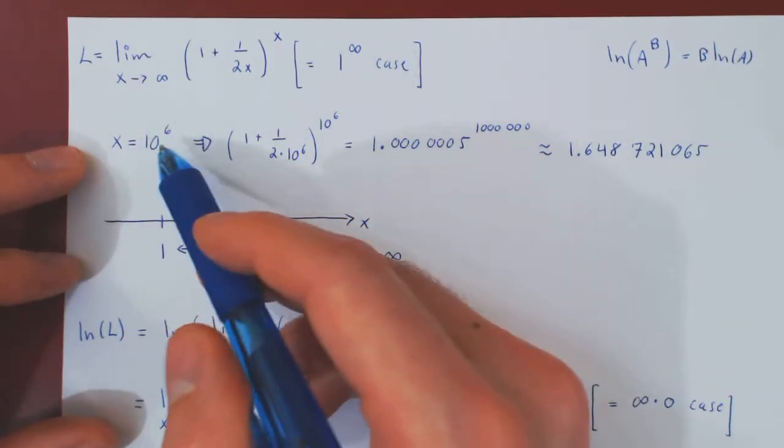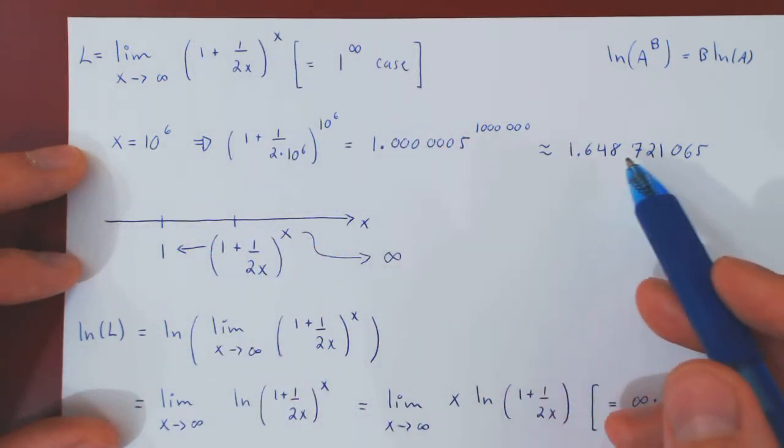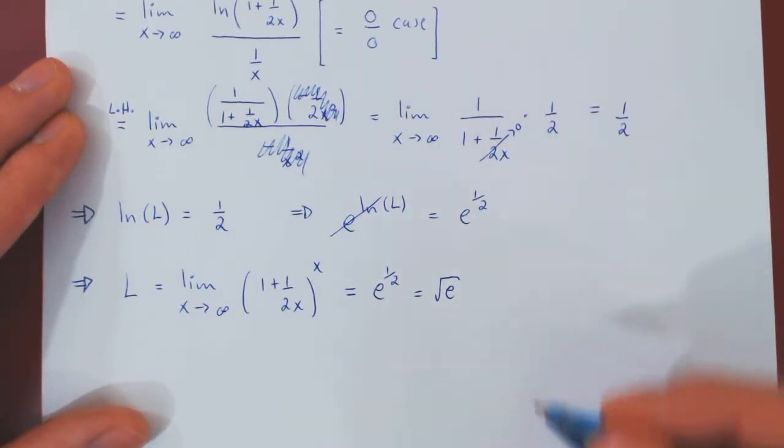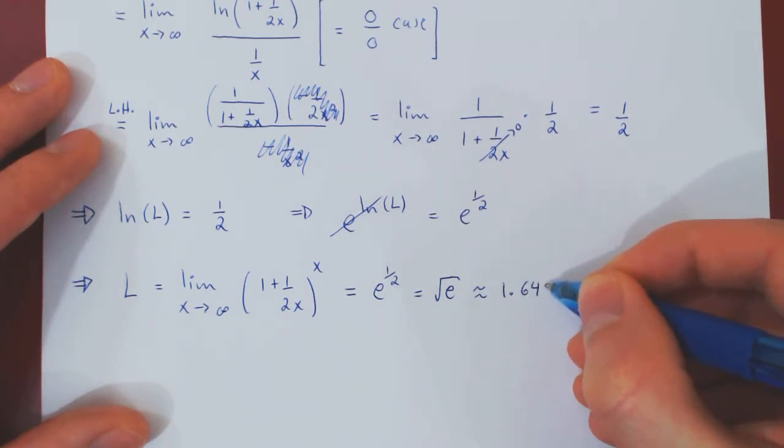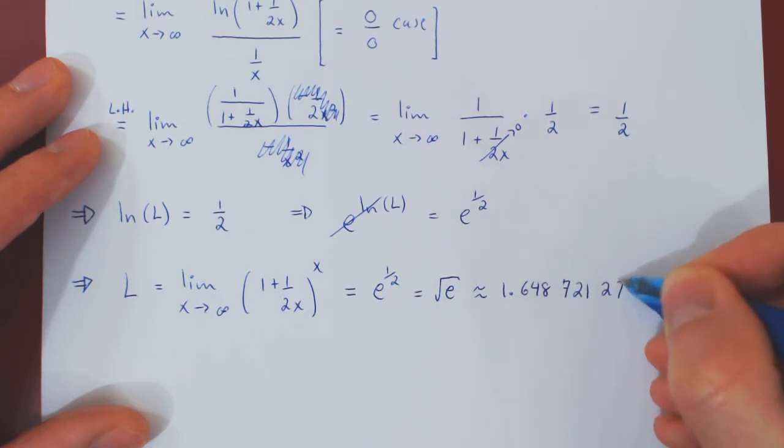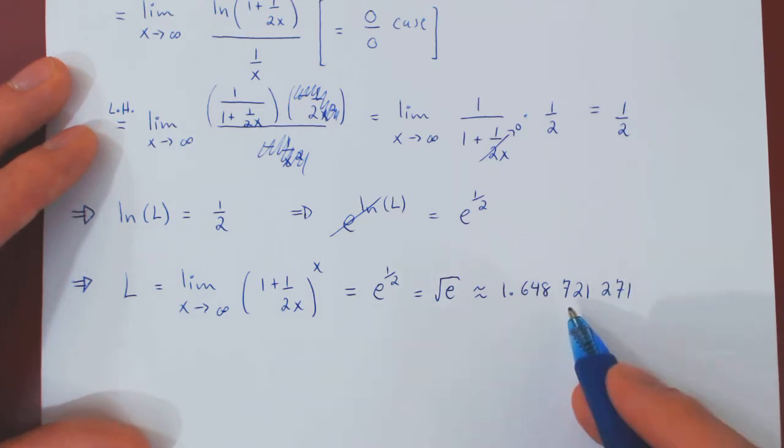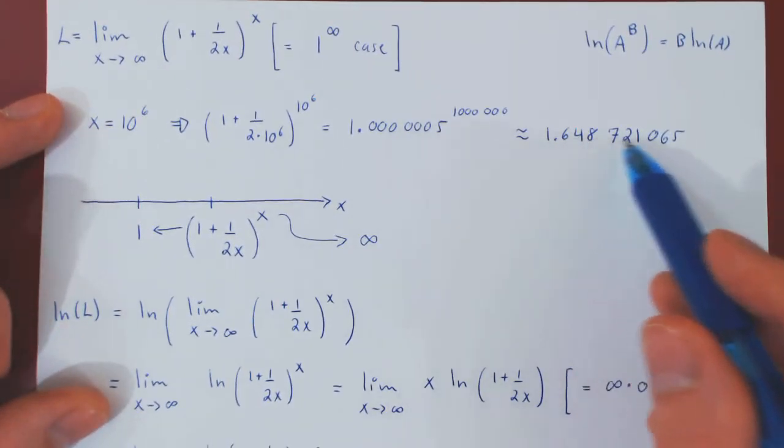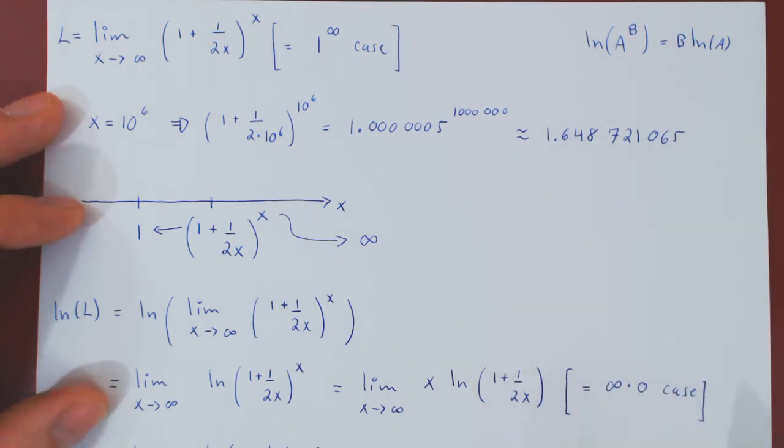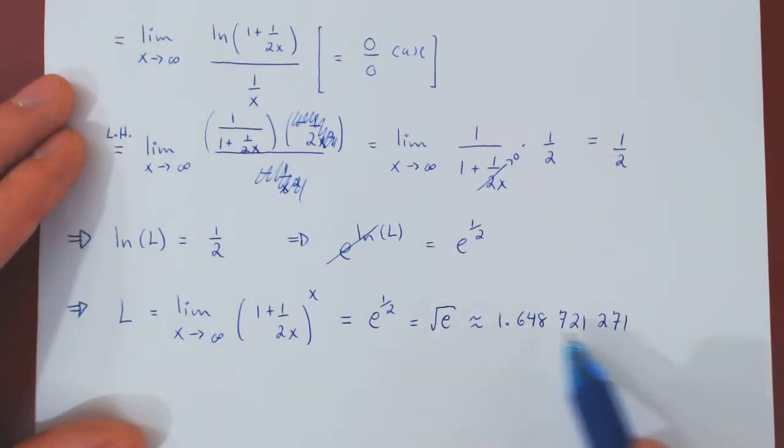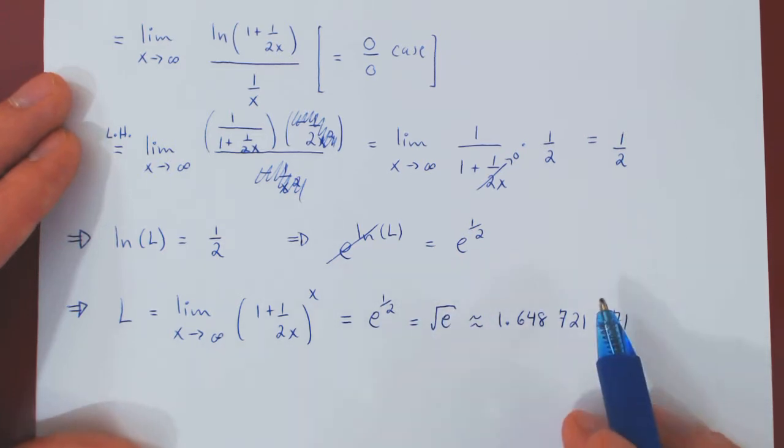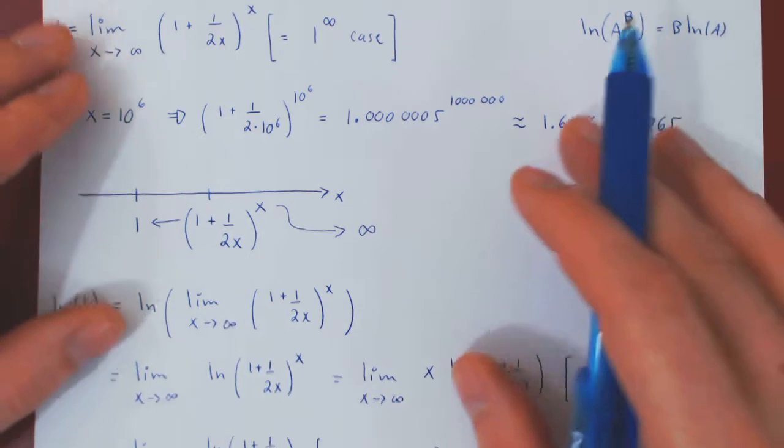And if you go back here to our approximation, we saw that when x was a million, the function was about 1.648. Well, if you use your calculator and you enter the square root of E, you will find the square root of E is approximately 1.648721271. And so you see, we're using x to be a million, we had a very good approximation for the value of the exact limit. This was very close to this value, which is an approximation to the square root of E.